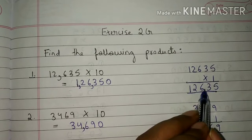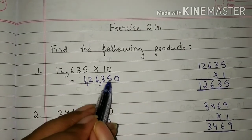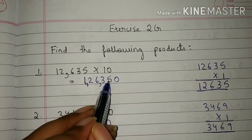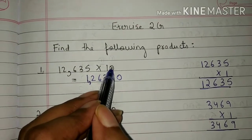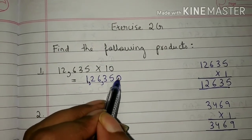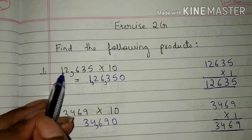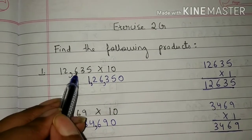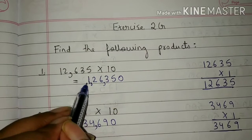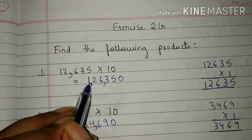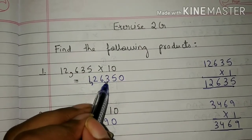So students, we will write 12,635 here. And here 0 is written, so we will write 0 here also. Now students, 12,635 multiplied by 10 will give 126,350.